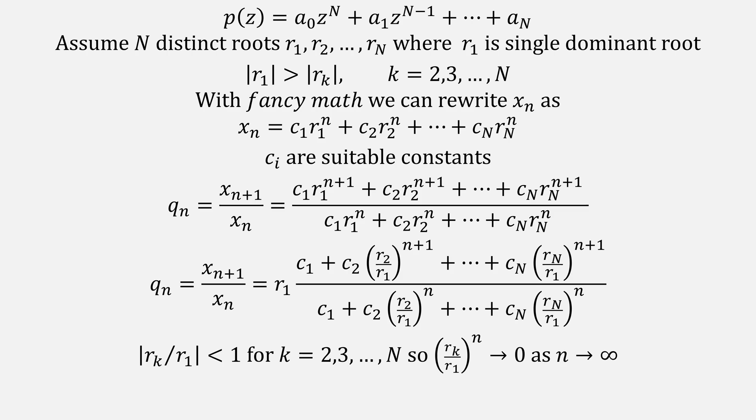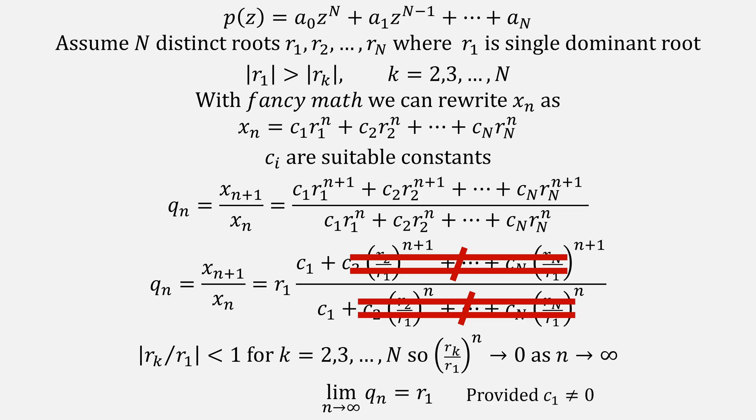in each of these root division fractions raised to an exponent, those values will go to 0, meaning we can simplify our equation to say that the limit as n approaches infinity for q sub n is r1, provided that c1 is not equal to 0.